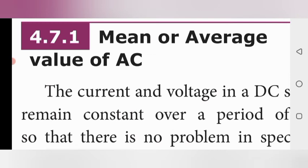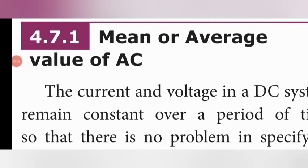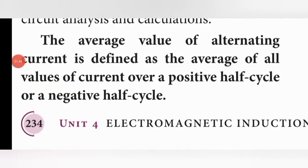In DC current, finding the value is easy, but in AC it is more difficult. In this lesson we cover two ways. The mean or average value of AC current: since AC produces alternating positive and negative half cycles in a sinusoidal wave, the mean or average value for one complete cycle is zero. So we have to find the magnitude, and the mean or average value is defined as the average of all the values of current over a positive half cycle.